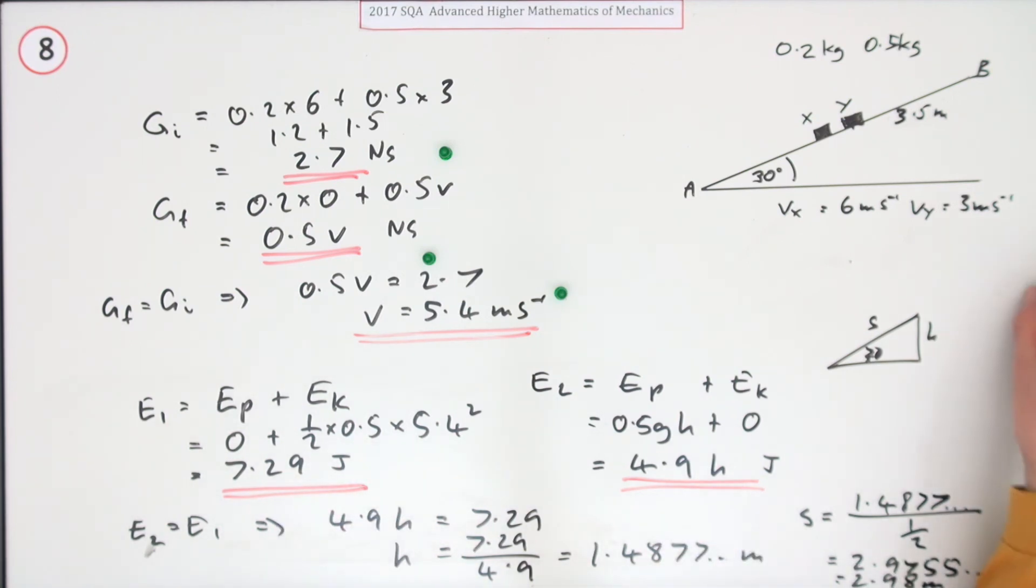It's not got this in the marking scheme, so I'm just guessing. There'll be one mark for getting the energies, one mark for equating them and getting the height, and then finally, one mark for getting the distance and making the comment. No, it won't reach it because it's less than 3.5 because it's 52 centimetres short.